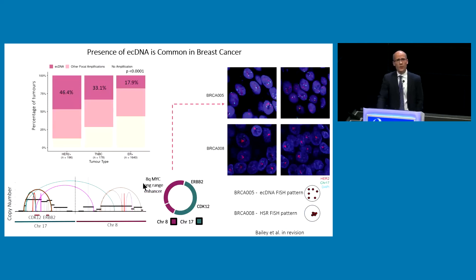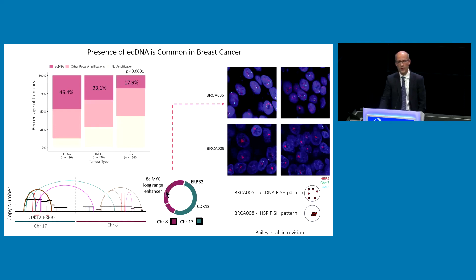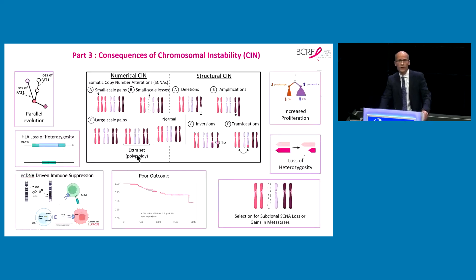Here's an example: in HER2-positive breast cancer, HER2 is fused in an EC-DNA to the MYC long-range enhancer, driving very profound expression of HER2. Because it's an EC-DNA, you get many copies of this fragment — not only amplification of the gene, but expression driven very potently by fusion to this 8q MYC long-range enhancer, driving high expression of the HER2 protein.